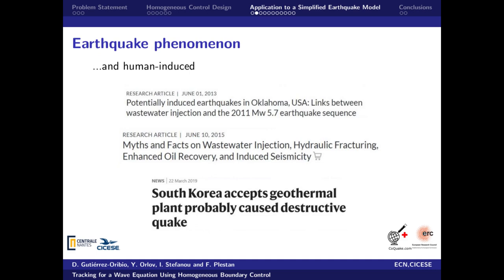Nowadays, it is generally accepted that humans can also induce or trigger earthquakes. Examples of this exist in oil and gas production, geothermal energy, and CO2 sequestration. All this makes earthquake prevention an important research topic to prevent future disasters.